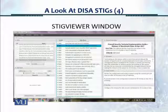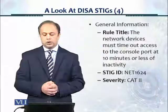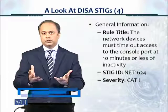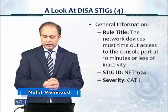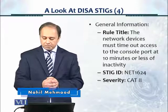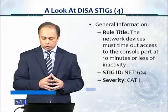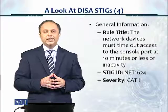When you click on the particular rule name in the middle window — the Vulnerability ID — it shows you on the right side the content relevant to that particular rule or control. The general information section on the top right shows the rule title, which is the actual control. It says: the network devices must time out access to the console port at 10 minutes or less of inactivity.